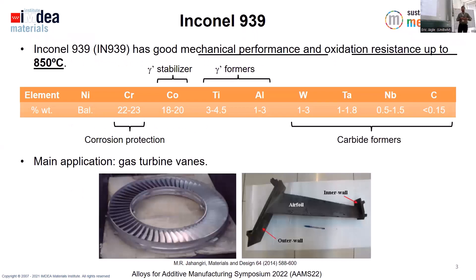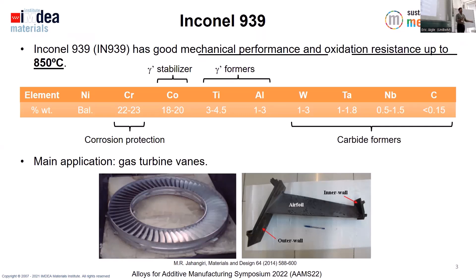IN939 is a precipitation-hardened nickel base superalloy. It has a high chromium and cobalt content, as well as a relatively high titanium and aluminum content, which are the gamma-prime formers, responsible for its good properties in terms of mechanical performance and oxidation resistance up to 850°C. Its main application is in gas turbine components for the energy or aircraft field.